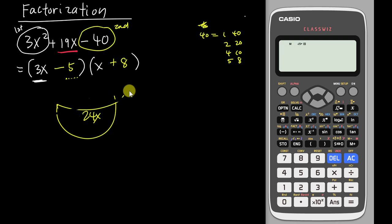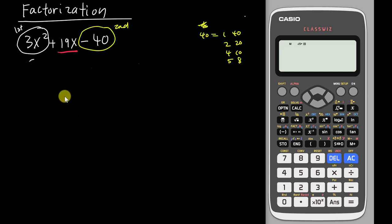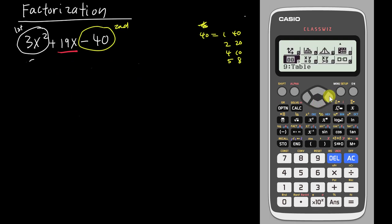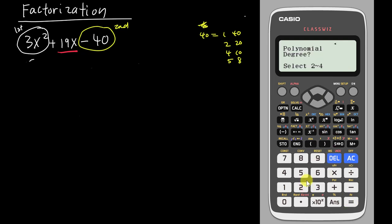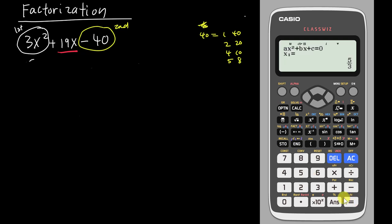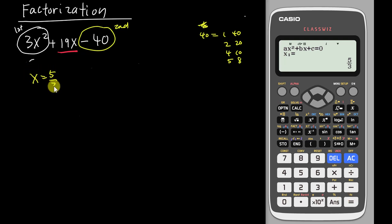For the last method, we use a calculator. Go to the menu, then to Equation, then choose Polynomial with degree 2. Insert a = 3, b = 19, c = negative 40 into the a, b, c values. Press Enter and the calculator gives both answers: the first answer is 5/3 and the second is negative 8.